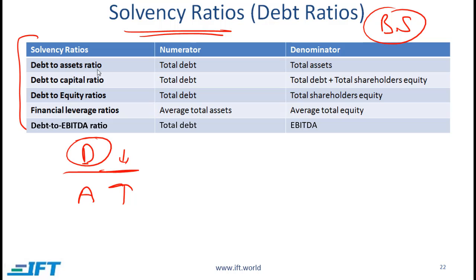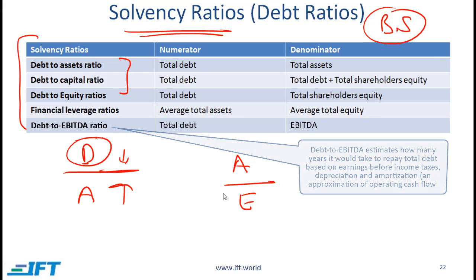With the debt to asset ratio, low is good. Debt to capital — capital generally refers to the total money that has been raised, that's debt as well as equity — this should also be low. Debt to equity ratios: again, low is safer. Financial leverage is total assets divided by equity; a high ratio here means high leverage. In general, a high ratio means high debt or high leverage, and you need to look at these numbers in the context of the industry, because in some industries leverage will be high and in others it will be low.